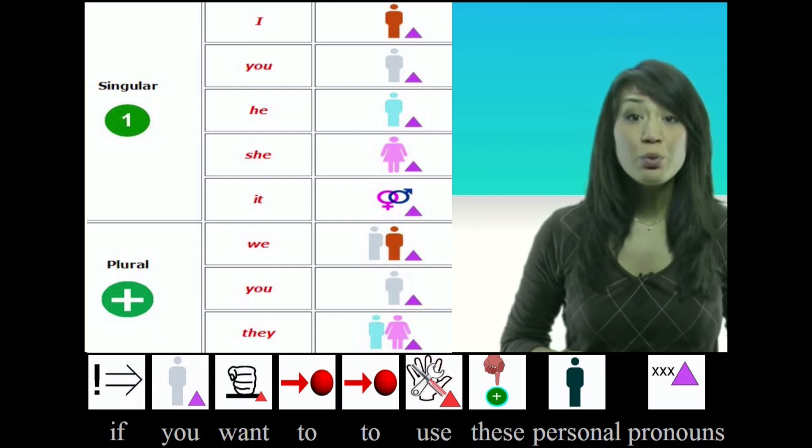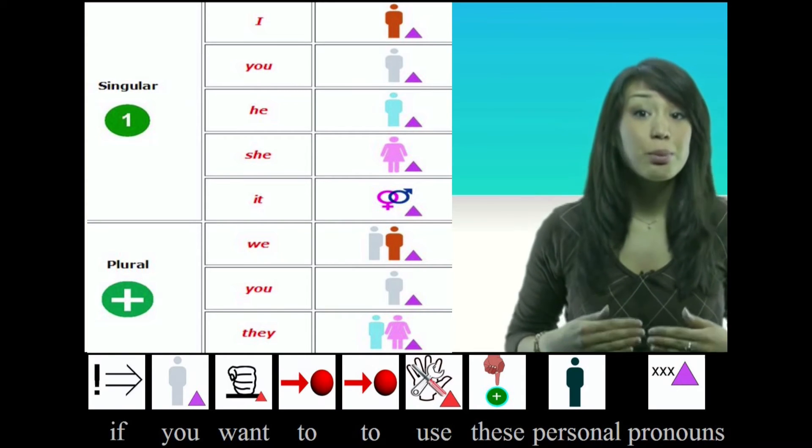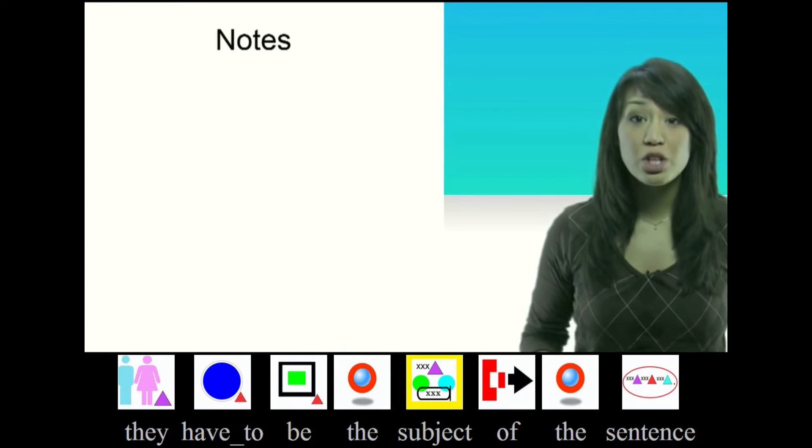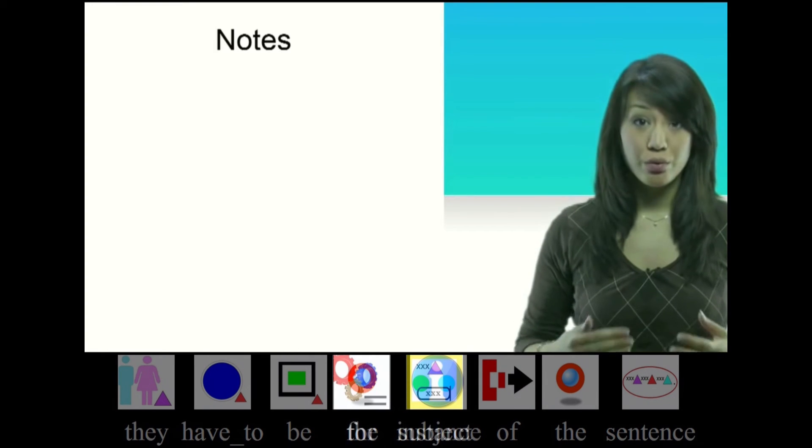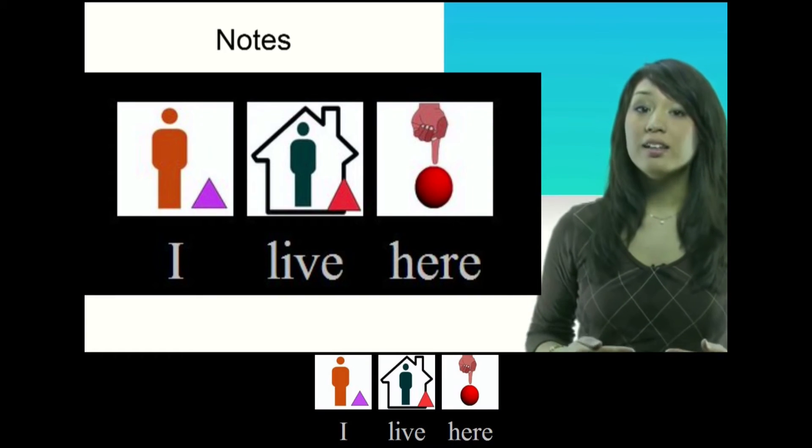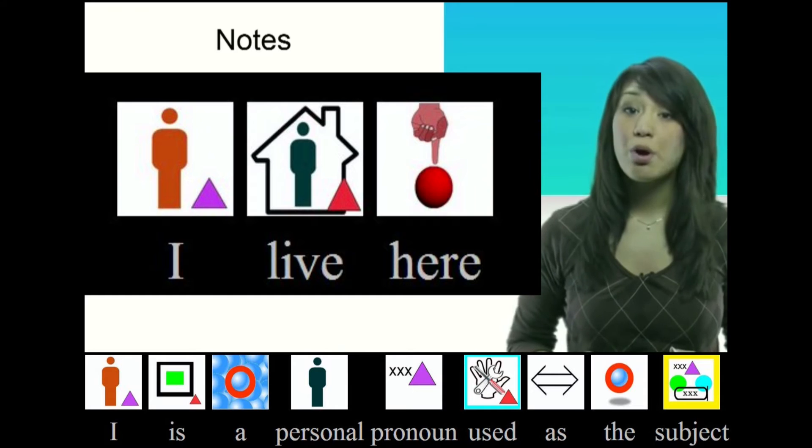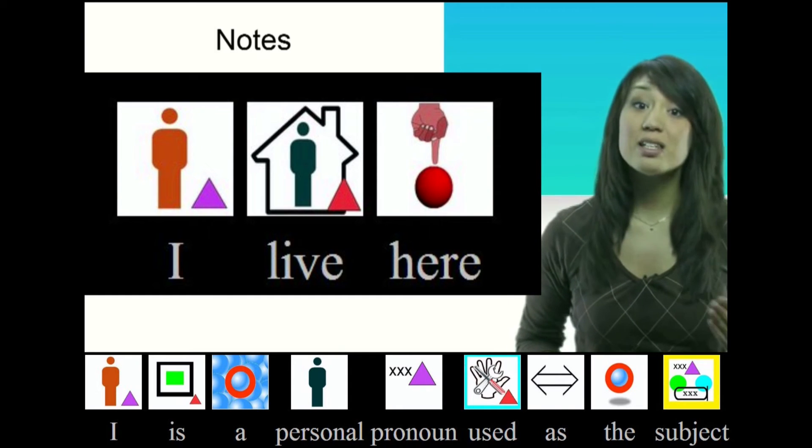If you want to use these personal pronouns in a sentence, they have to be the subject of the sentence. For instance, I live here. I is a personal pronoun used as a subject.